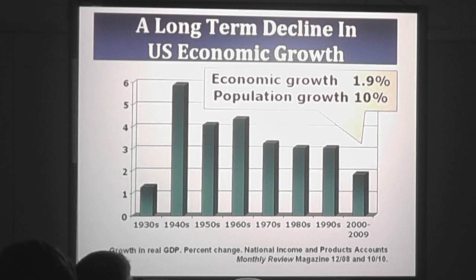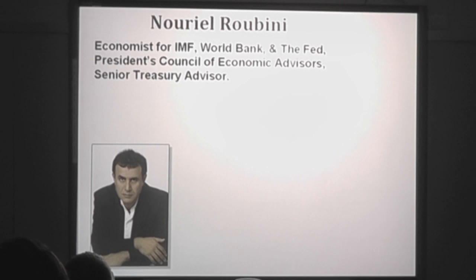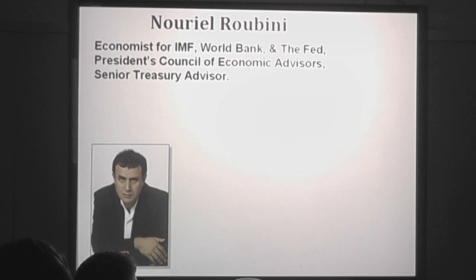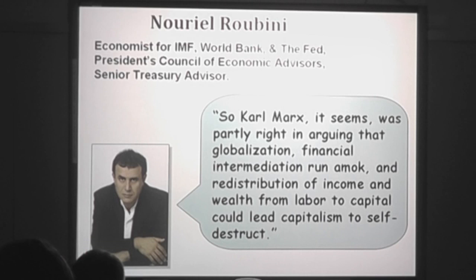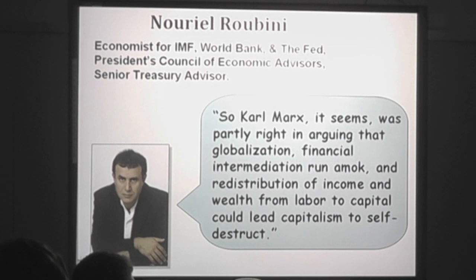I want to introduce you to Nouriel Roubini — an economist who worked for the IMF, World Bank, Federal Reserve, and President Clinton's Council of Economic Advisers, now a senior treasury advisor. Here is what he said: 'Karl Marx, it seems, was partly right in arguing that globalization and financial intermediation run amok and redistribution of income from labor to capital could lead capitalism to self-destruct.' He also added that socialism wasn't the answer. But this was an amazing admission.